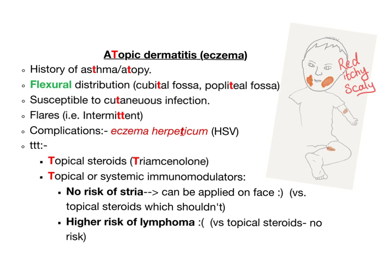The rash is located in flexural distribution — areas where flexion occurs, such as the cubital fossa and the popliteal fossa. The rash is red, itchy, and scaly.